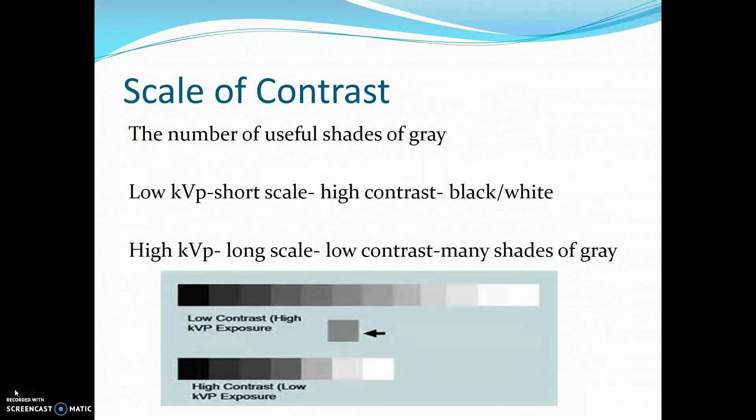The scale of contrast is the number of useful shades of gray. Low KVP creates short scale, high contrast, black and white images. High KVP creates long scale, low contrast images with many shades of gray.